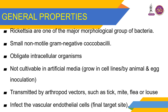Rickettsia is one major morphological group of bacteria — small, non-motile, gram-negative coccobacilli, obligate intracellular organisms, not cultivable in artificial media, but grow in cell lines, animals or eggs. They are transmitted by arthropod vectors such as tick, mite, flea or louse. They infect the vascular endothelial cell, which is the final target site of rickettsial infection. These six fundamental characters represent the core knowledge of rickettsia.